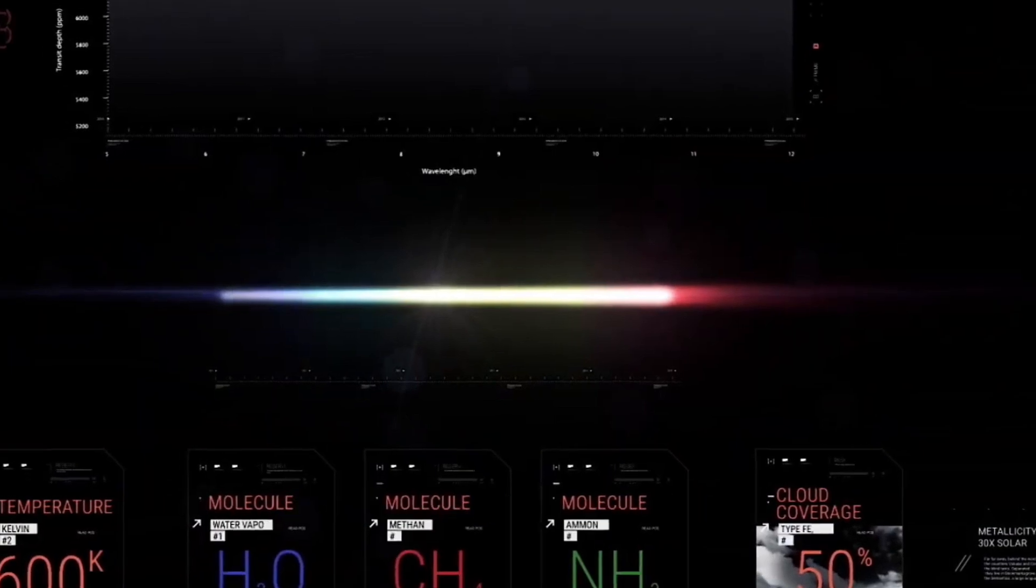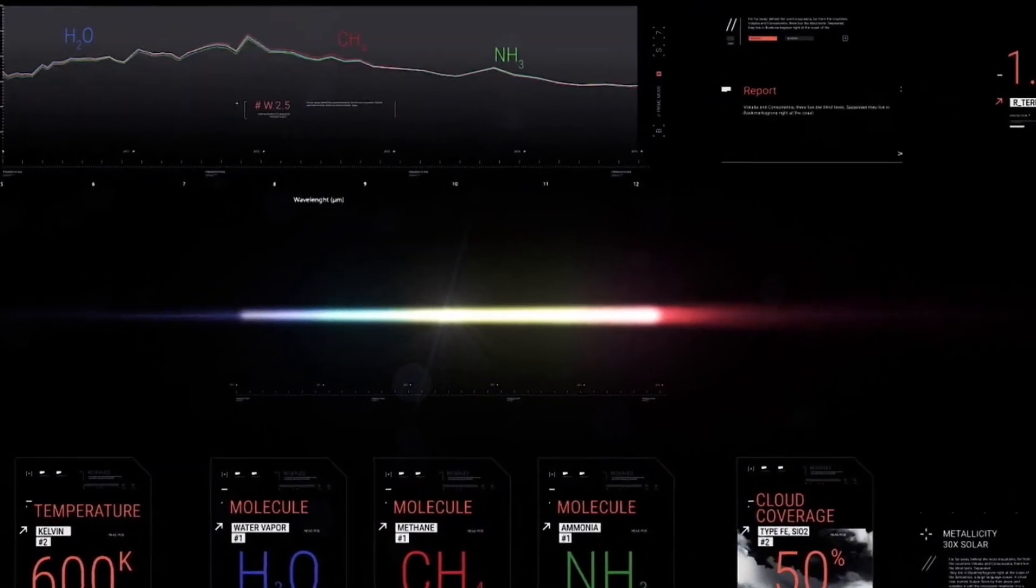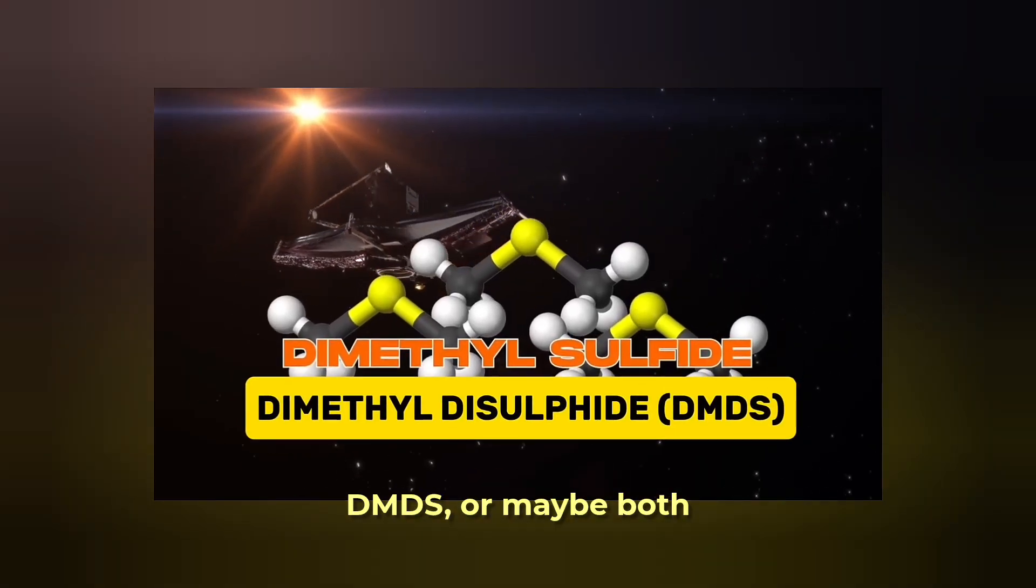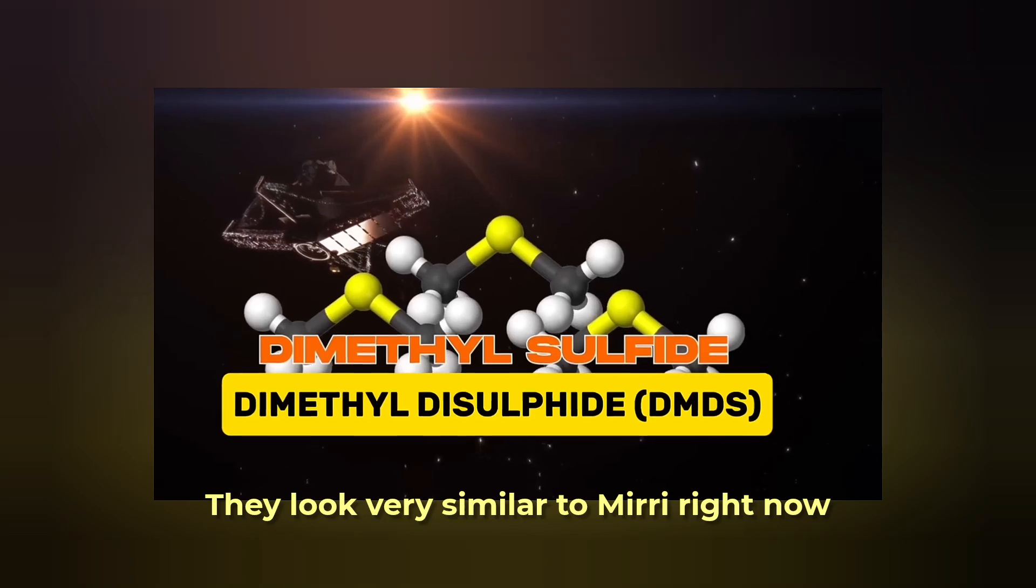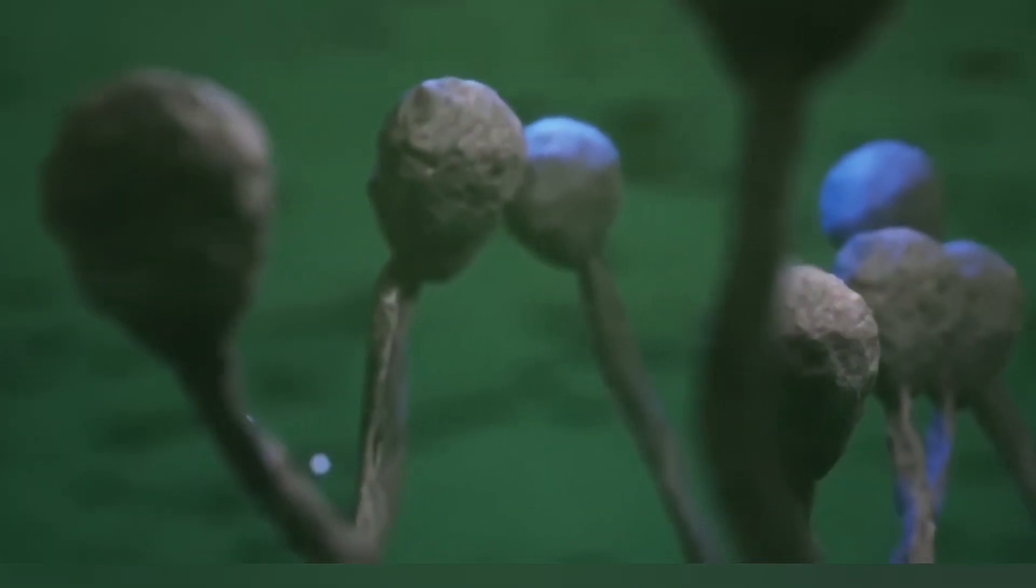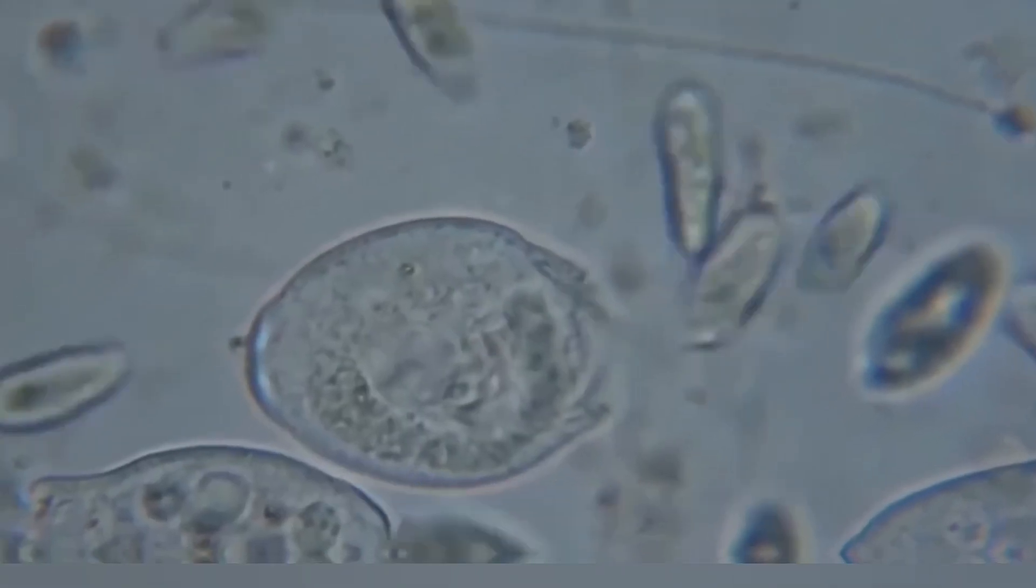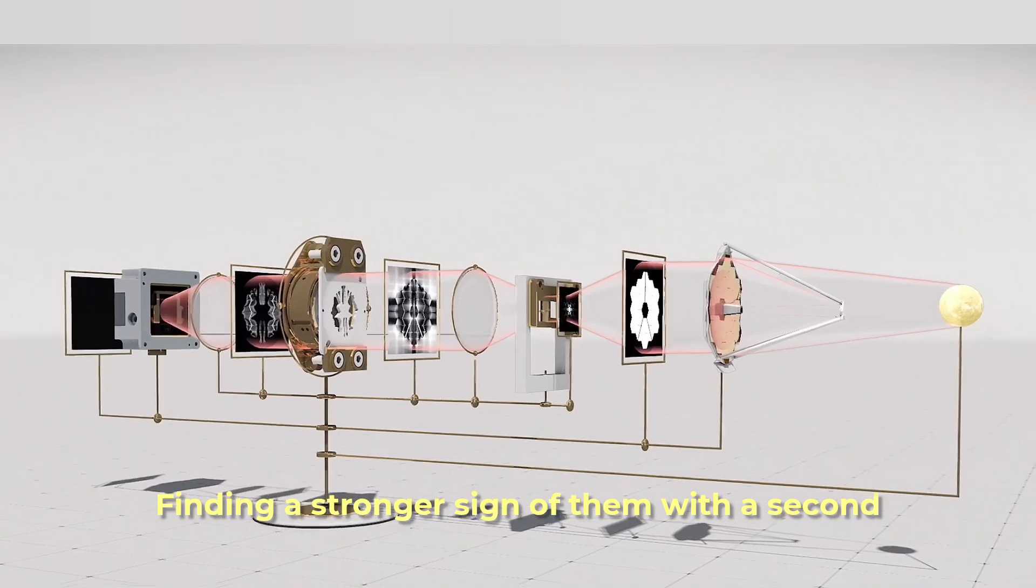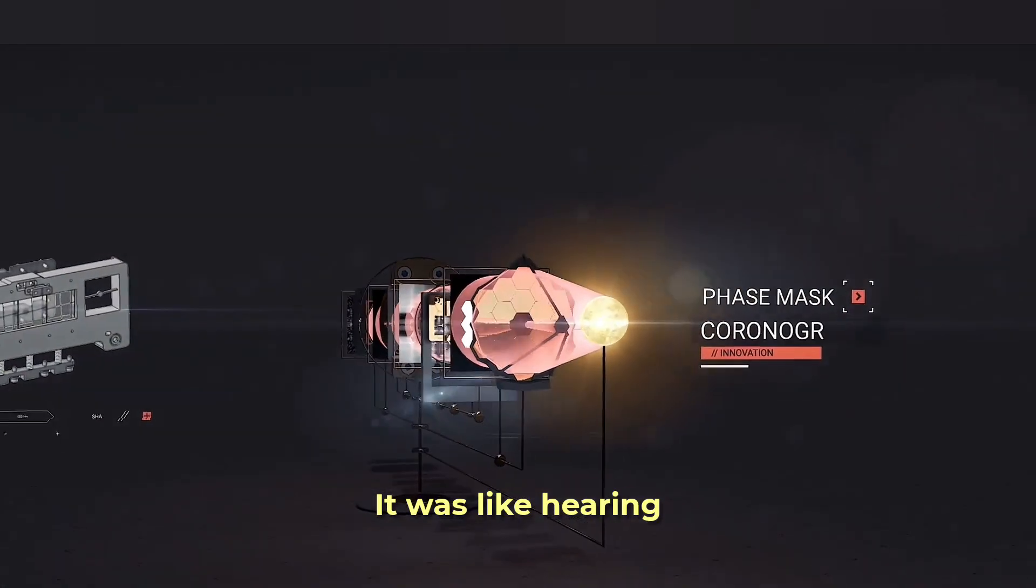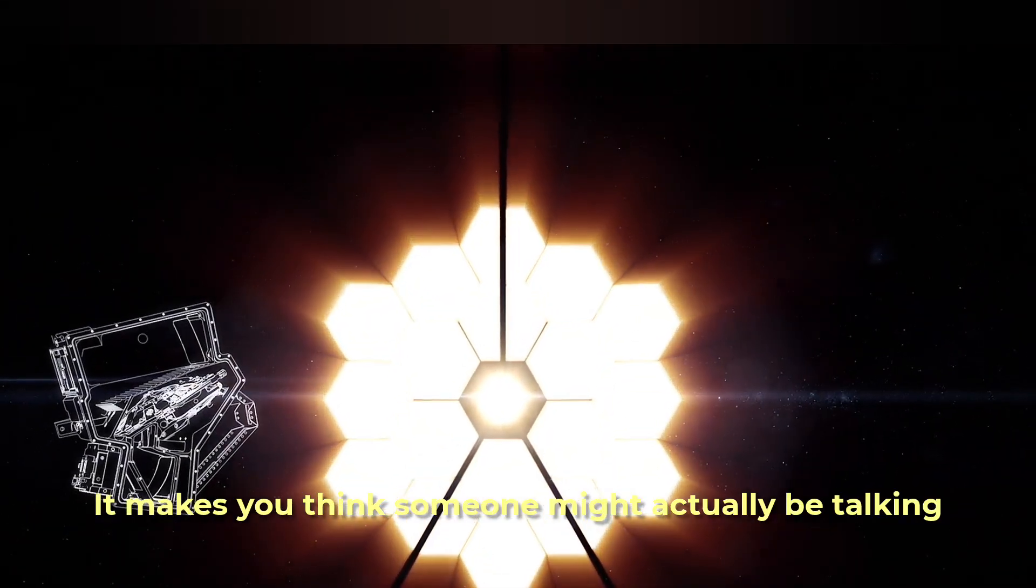The team reported that this time, the signal matching DMS looked strong and clear. It could also be a close cousin of DMS called DMDS, or maybe both. They look very similar to MIRI right now. But here's the important part. On Earth, both of these smelly sulfur gases are mostly made by living things. Finding a stronger sign of them with a second tool made the discovery much more believable. It was like hearing that strange whisper on two different phones. It makes you think someone might actually be talking.